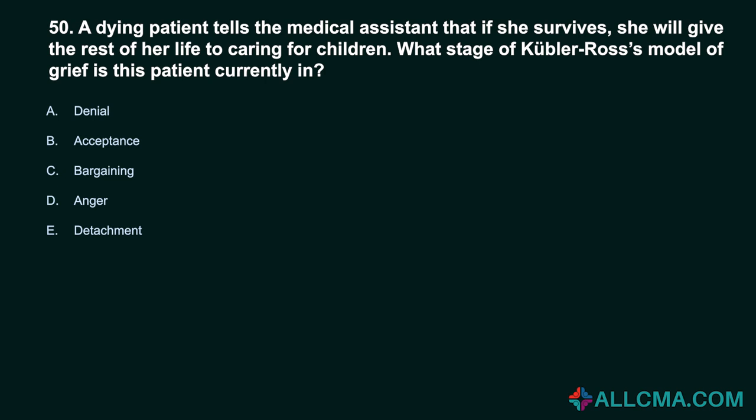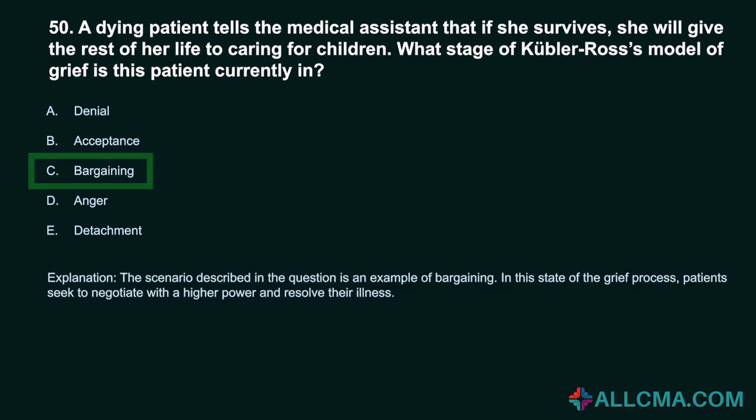Question 50: A dying patient tells the medical assistant that if she survives, she will give the rest of her life to caring for children. What stage of Kübler-Ross' model of grief is this patient currently in? A. Denial. B. Acceptance. C. Bargaining. D. Anger. E. Detachment. Correct answer: C. Bargaining. The scenario is an example of bargaining. In this stage of the grief process, patients seek to negotiate with a higher power and resolve their illness.